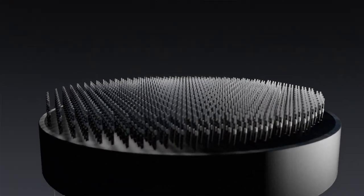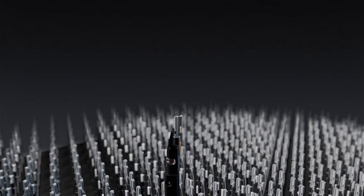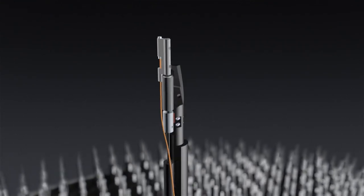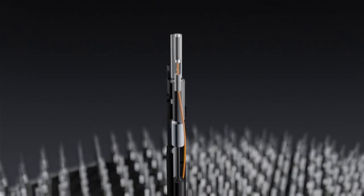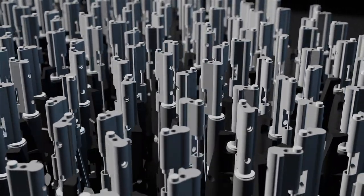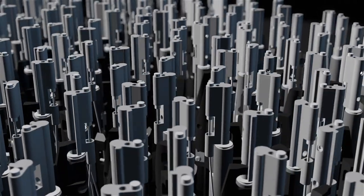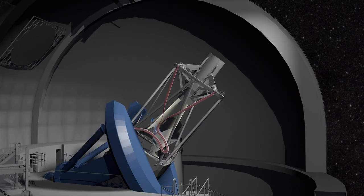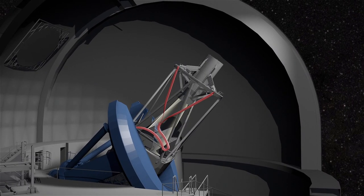5,000 robotic positioners, each carrying a single optical fiber, are programmed to move to pre-selected sequences of galaxy targets. This automated dance of robots allows DESI to target sequences of thousands of galaxies at a time.